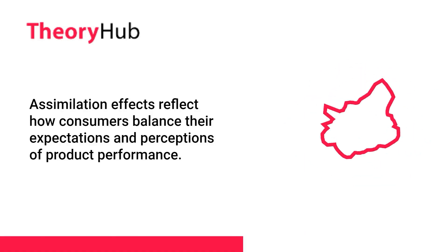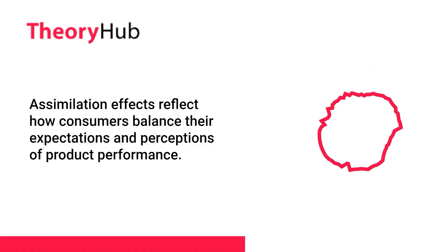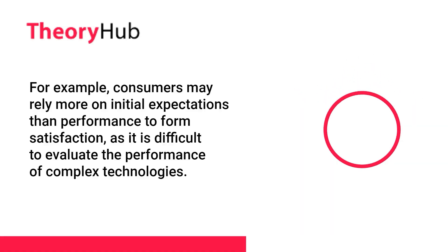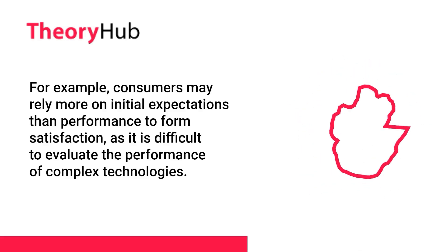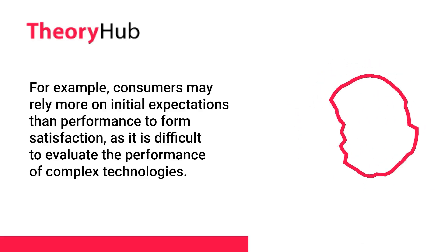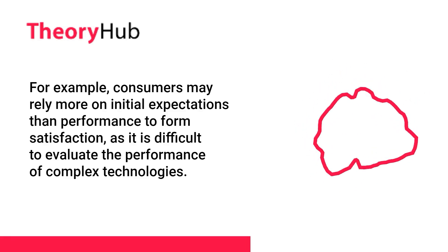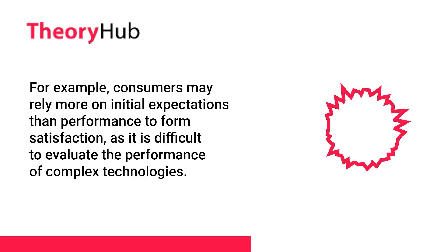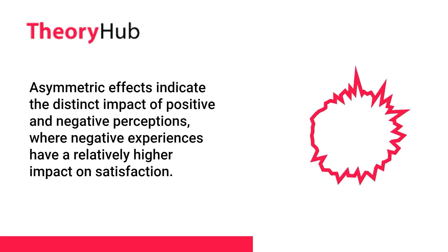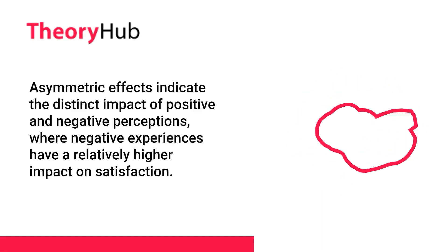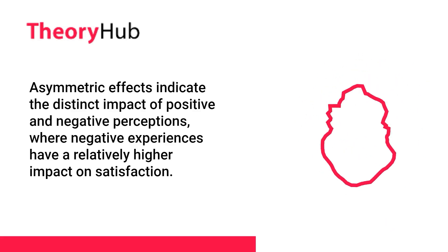Assimilation effects reflect how consumers balance their expectations and perceptions of product performance. For example, consumers may rely more on initial expectations than performance to form satisfaction, as it is difficult to evaluate the performance of complex technologies. Asymmetric effects indicate the distinct impact of positive and negative perceptions, where negative experiences have a relatively higher impact on satisfaction.